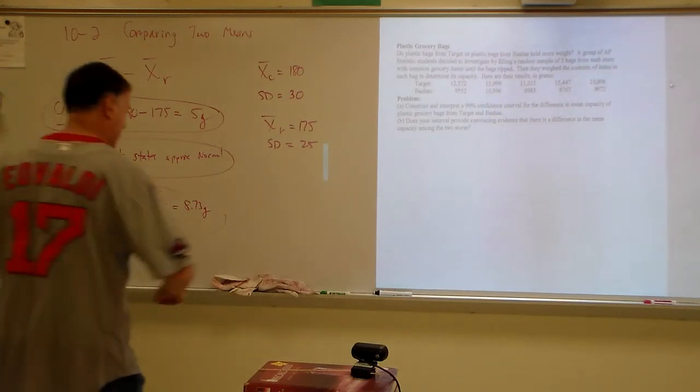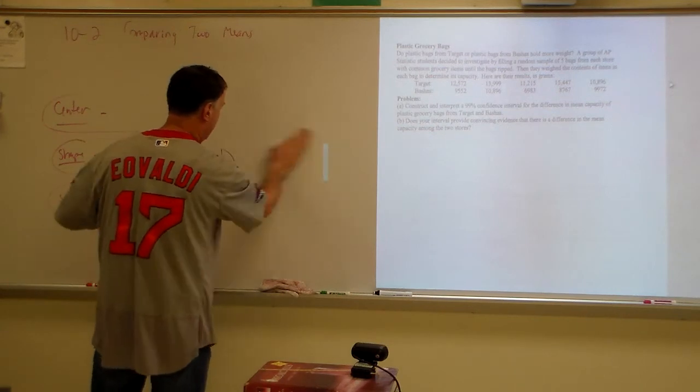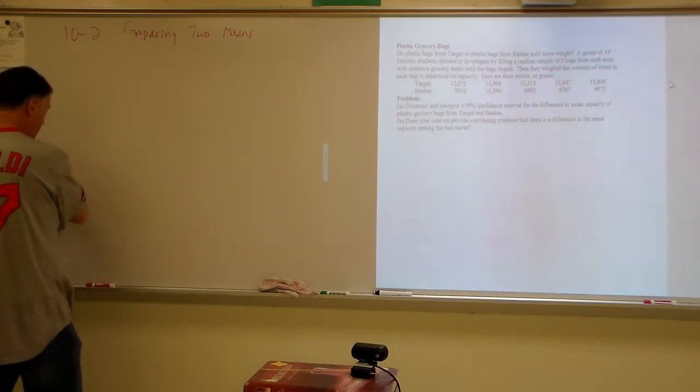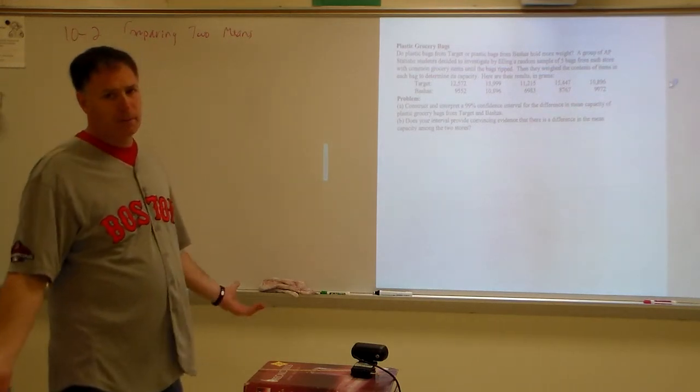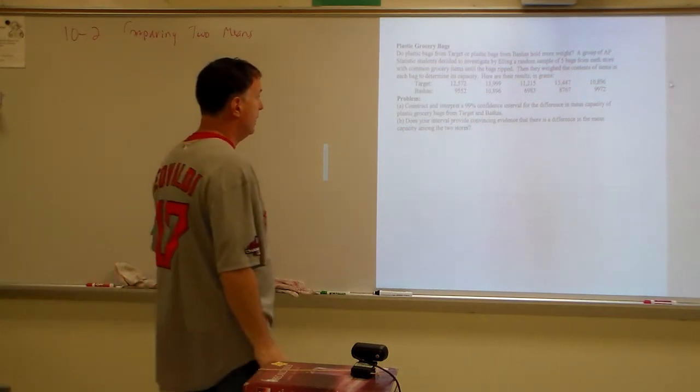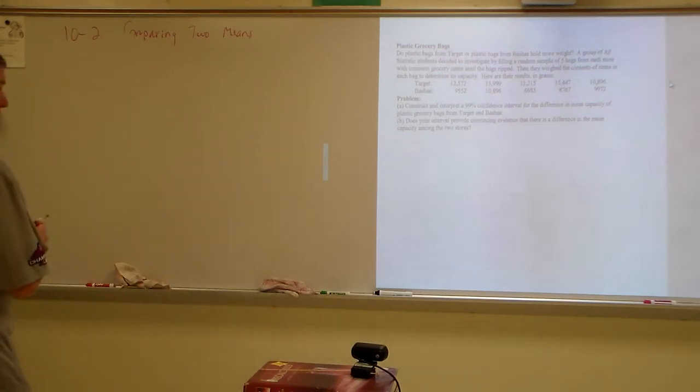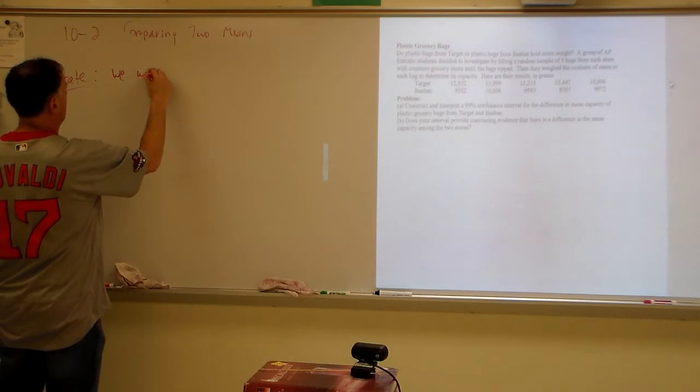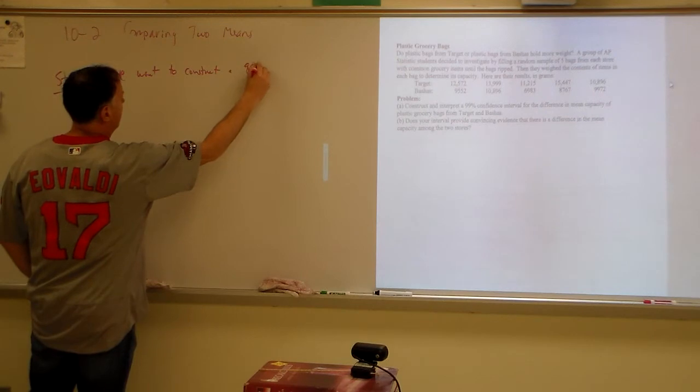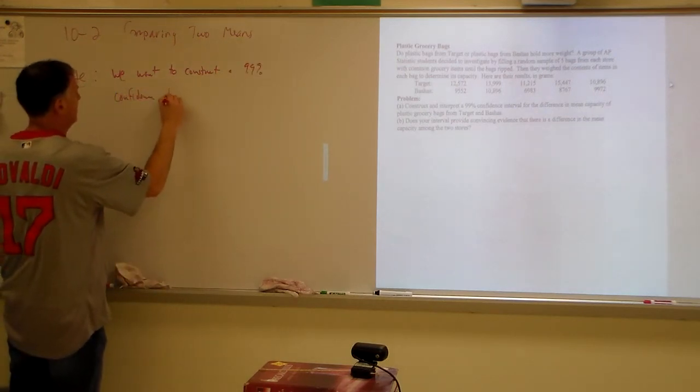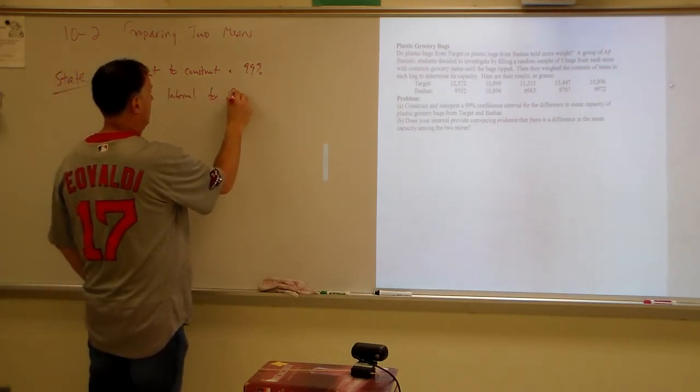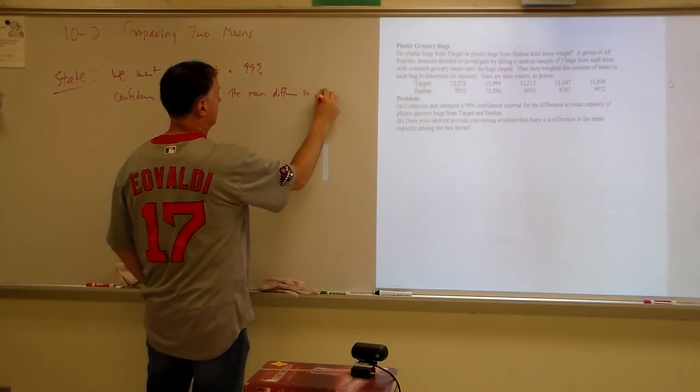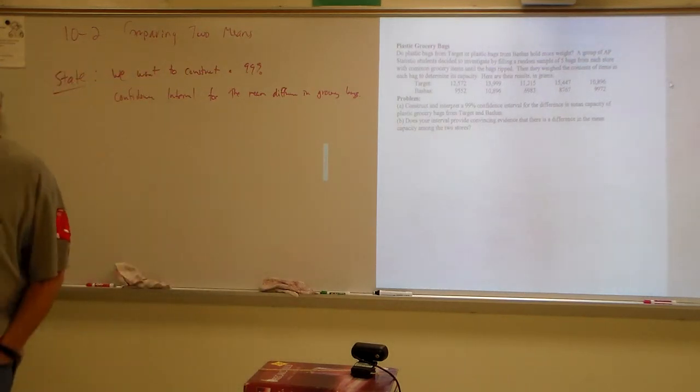We're not going to worry about the second part of that. We're going to do some of that when we do our significance test and our confidence interval. We are going to start with a confidence interval. So on the next page, it says at the bottom, confidence intervals for the difference of two means. Two sample T interval for a difference between two means. Two sample T interval. Notice it's not Z because it's not proportions. Two sample T interval for a difference between two means.